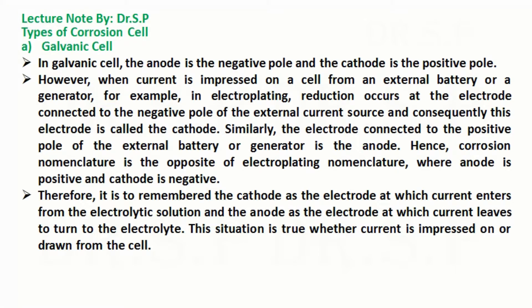Types of Corrosion Cell. In a galvanic cell, the anode is the negative pole and the cathode is the positive pole.